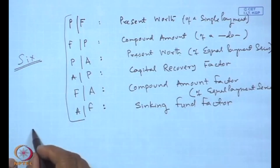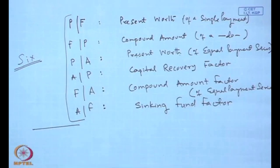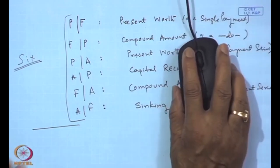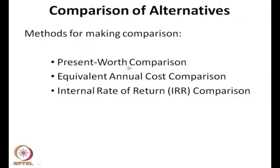We had used these to make comparisons among economic alternatives, and in that we discussed 3 different methods: the present worth comparison method, the equivalent annual cost comparison method, and the internal rate of return comparison method. These 3 are very basic comparison methods based on consideration of the time value of money.